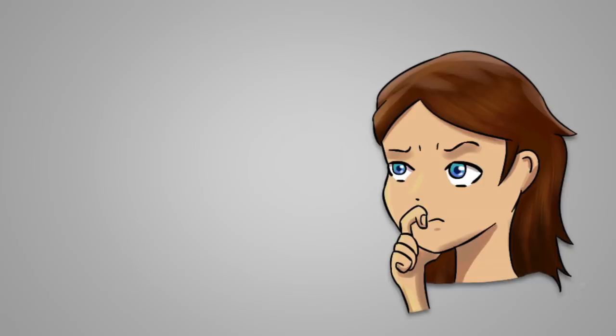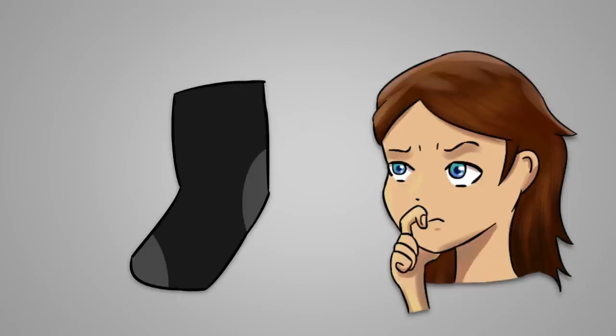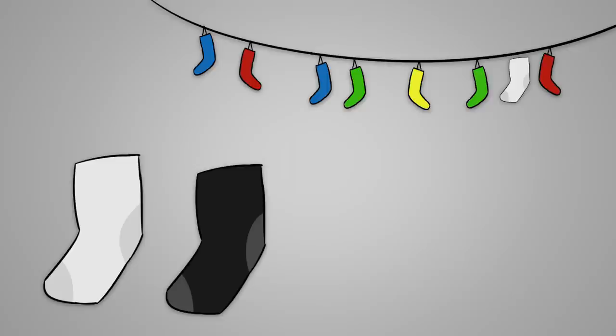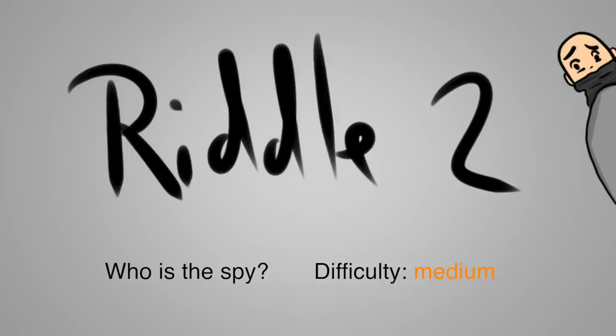More important is the fact that there are only two traits that the socks can have. It's either black or white. Therefore, when she grabs the third sock, she will definitely have one pair of socks which shares the color. The next riddle will be harder than the first one.